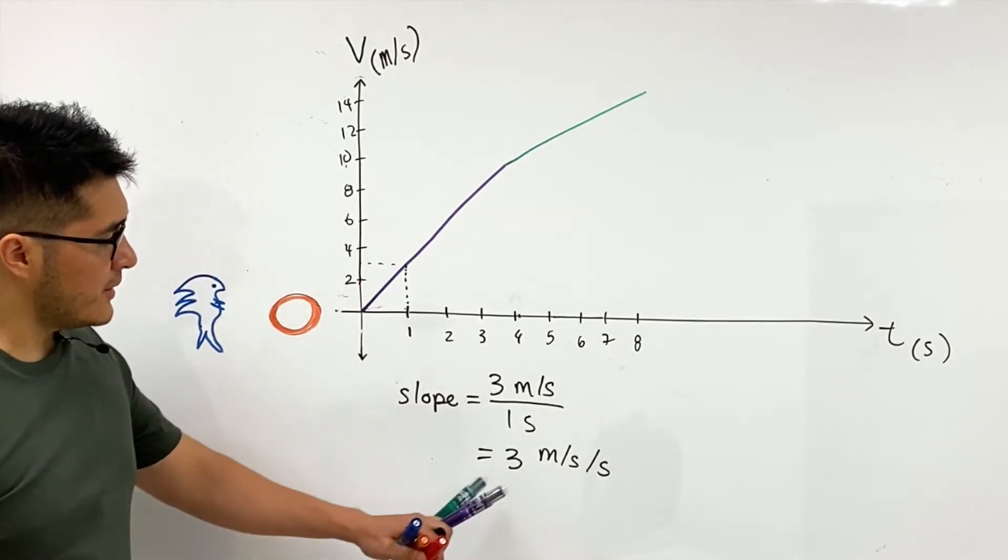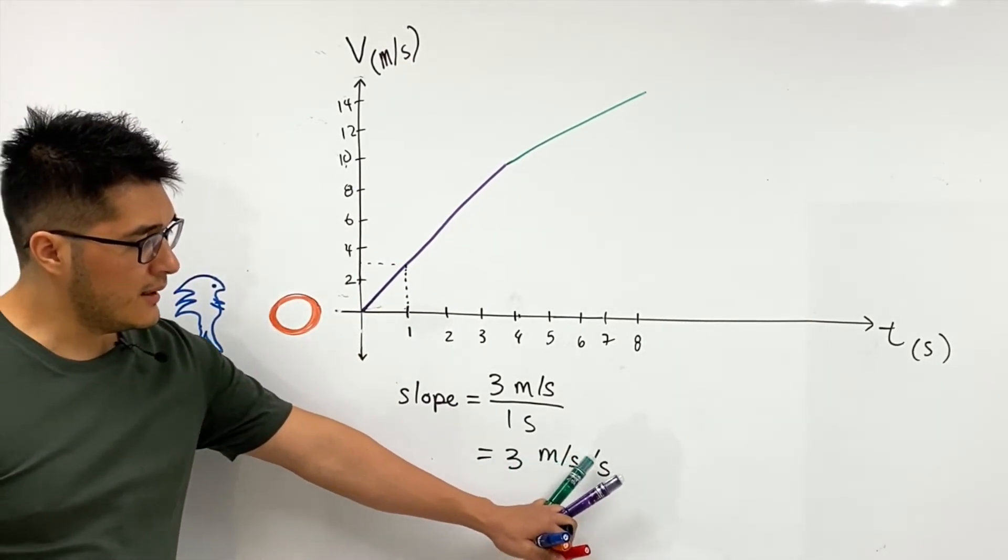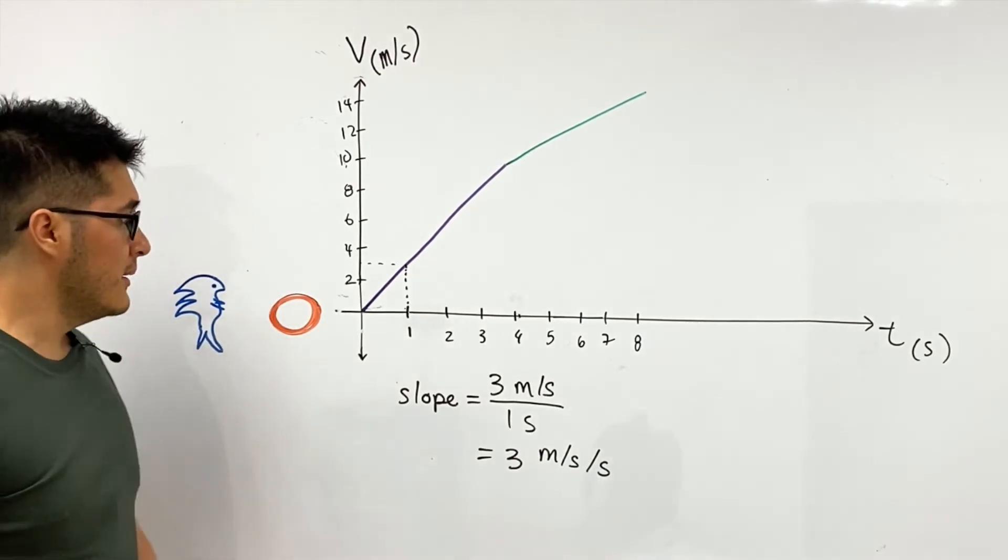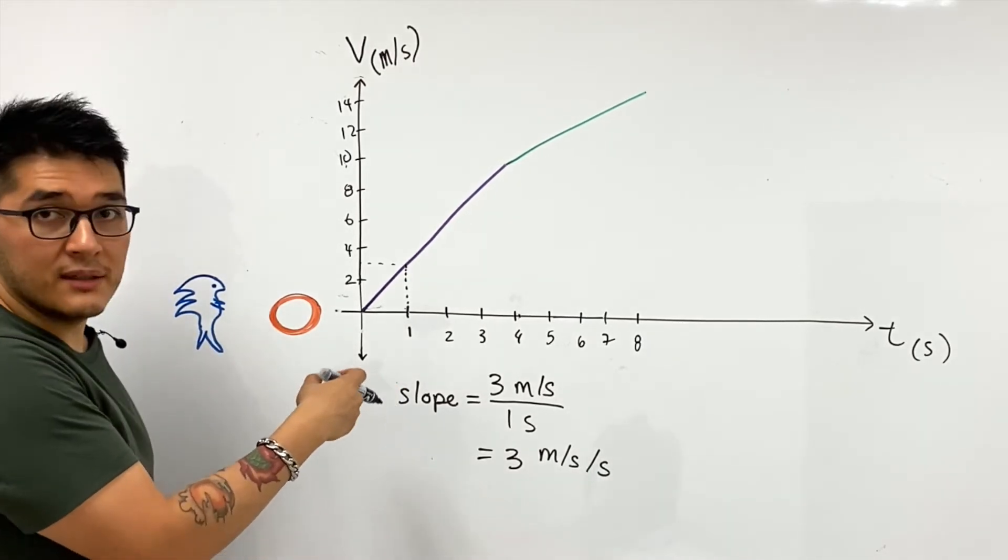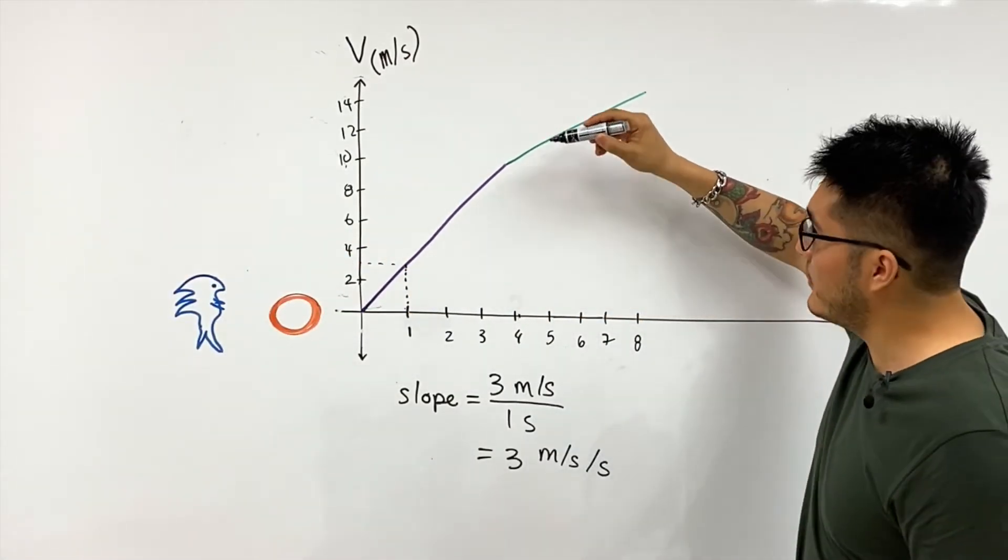So the slope tells us Sonic is able to cover three meters per second in each second that goes by. So that's how quickly he is speeding up in the purple side of the graph, but let's see for the green graph.